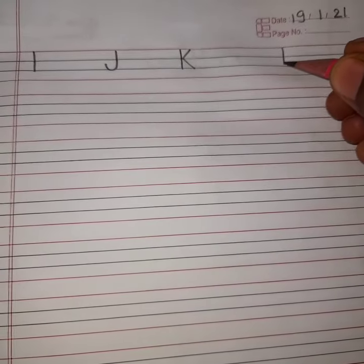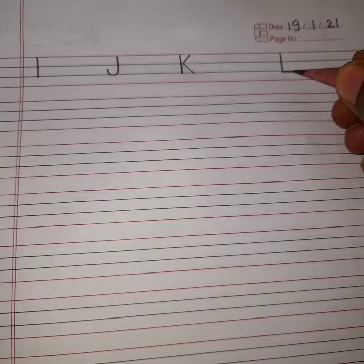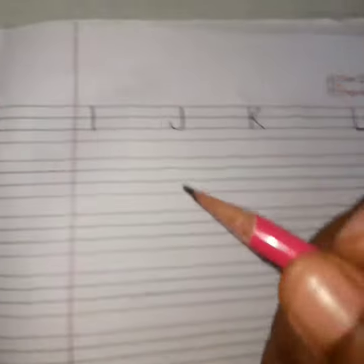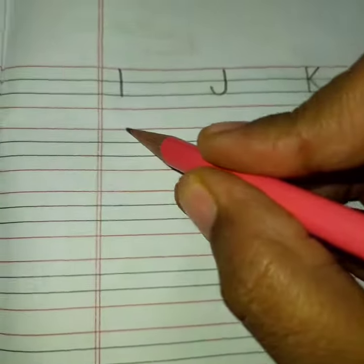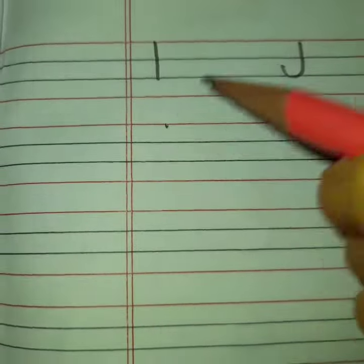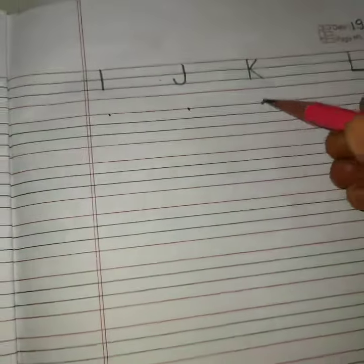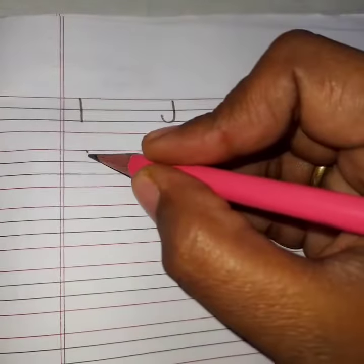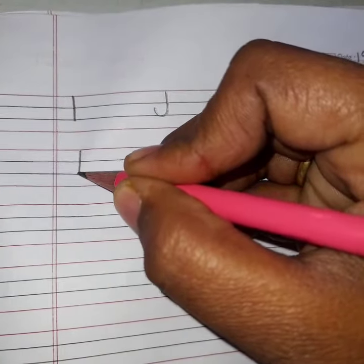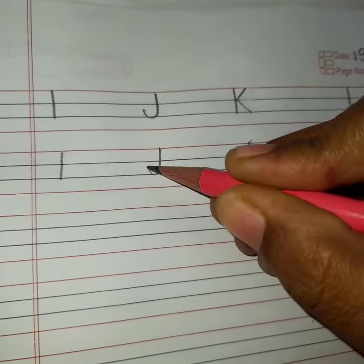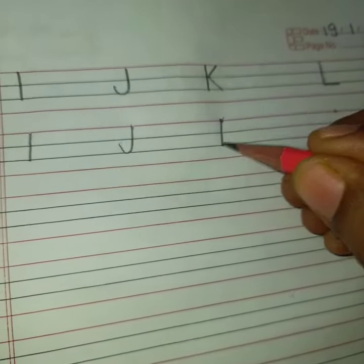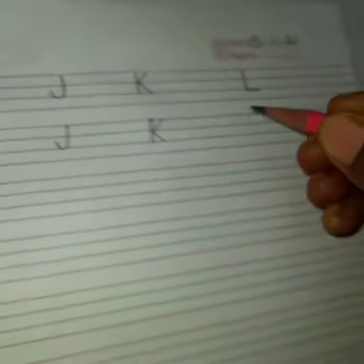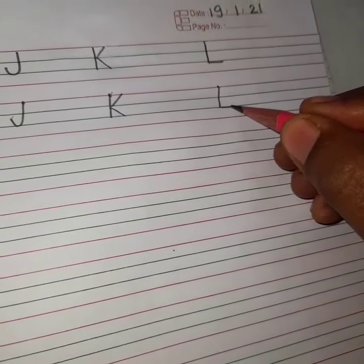Now, standing line and sleeping line. So now — I, J, K, L. Okay? I, J, K, L.